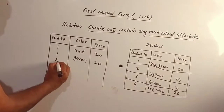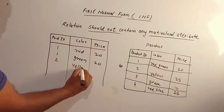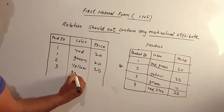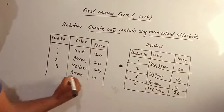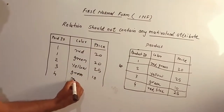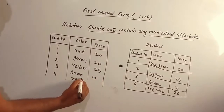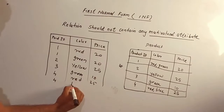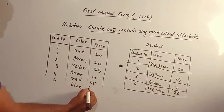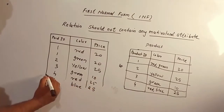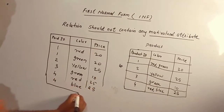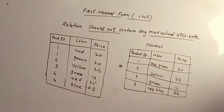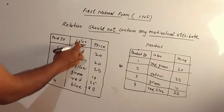Then: 2, yellow, 25. Then 3, green. Then 4 has a two-value attribute — 4, blue, 25. We now have product ID, color, and price laid out in separate rows.